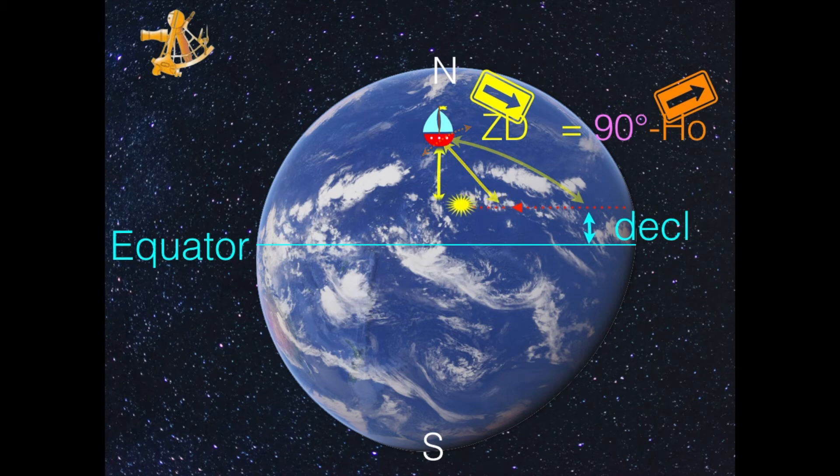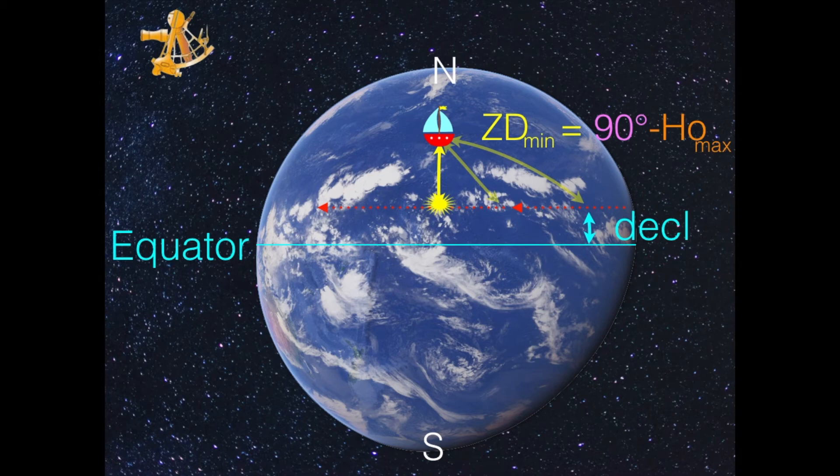Because look what happens exactly at noon. Exactly at noon, the sun is due south of us and the azimuth, the direction to the sun, is in other words, south.